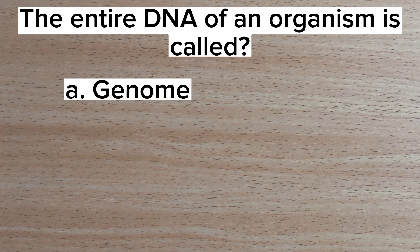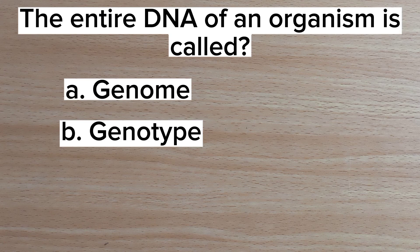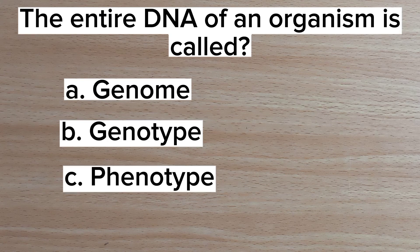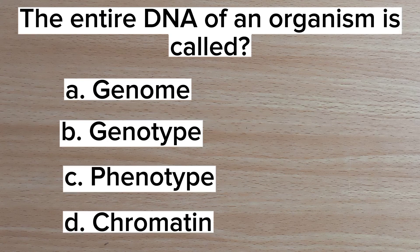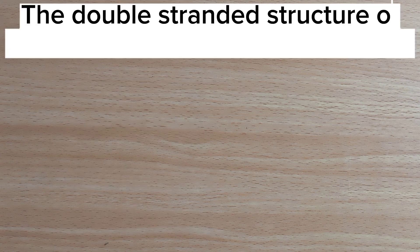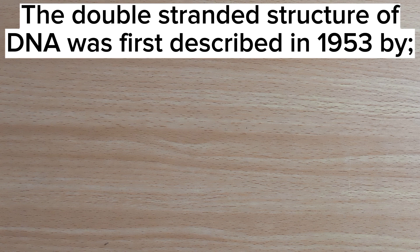Number fourteen: the entire DNA of an organism is called — A. Genome, B. Genotype, C. Phenotype, D. Chromatin. Answer: A. Genome.